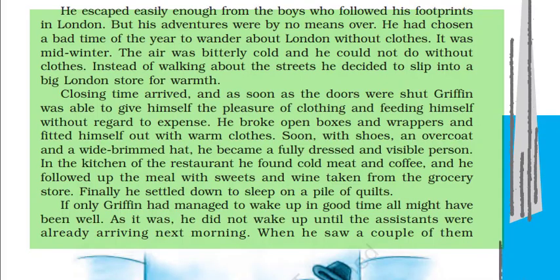Griffin managed to escape from the two keen boys' observation and entered unseen into a big store to get warm. After the store was closed at night, Griffin put on some new clothes, consumed meat and coffee from the restaurant in the store, and went to sleep on a pile of quilts. He overslept and only woke up when the shop had opened and the assistants had arrived. On being seen and chased by them, he again took off his clothes so that they could not see him.